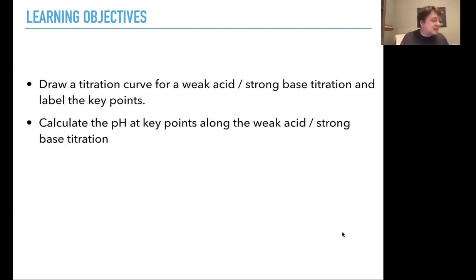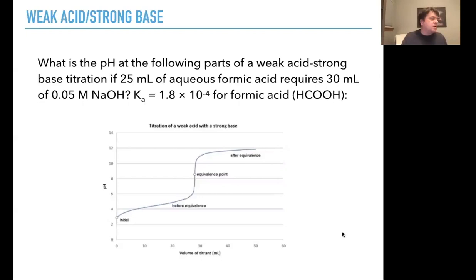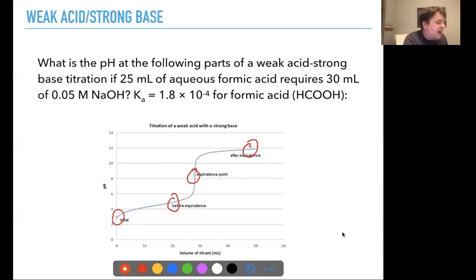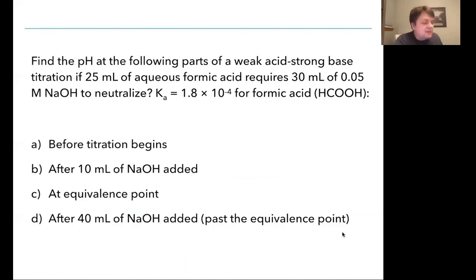For a weak acid — a strong base being titrated into a weak acid — we want to label the key points and calculate the pH at key points along this weak acid/strong base titration. So: what is the pH of the following parts if 25 milliliters of aqueous formic acid requires 30 milliliters of 0.05 molar sodium hydroxide to reach the equivalence point? We'll look at before titration begins, after 10 mL of NaOH is added, at the equivalence point, and after 40 mL of NaOH is added, which is past the equivalence point.